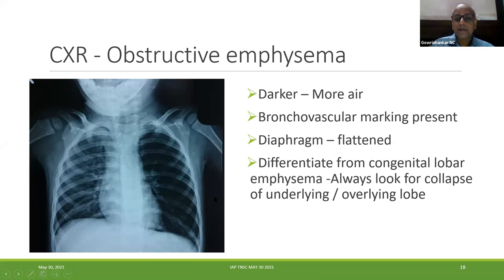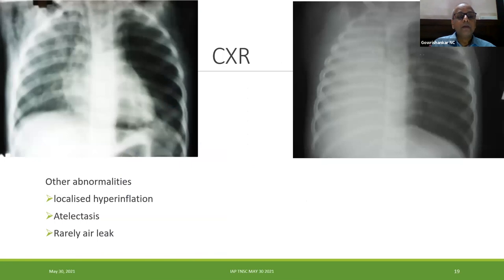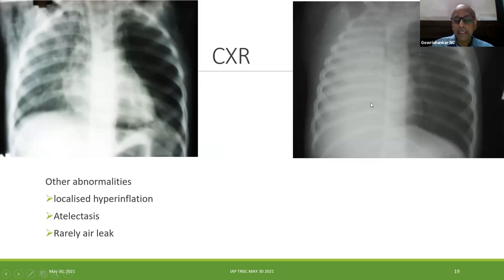You always have to differentiate from congenital lobar emphysema — always look for collapse of the underlying or overlying lobes. Always look at the X-ray in the X-ray lobby. Other abnormalities include localized hyperinflation, atelectasis, or air leak — such as pneumopericardium or subcutaneous surgical emphysema.